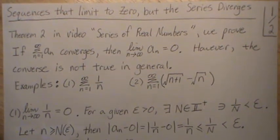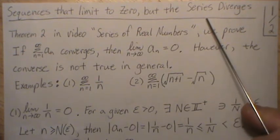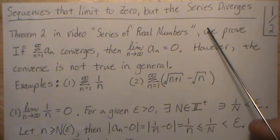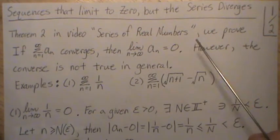Hello, in this video we look at sequences that limit to zero but their series diverges. What that means is each term as you go farther out approaches zero and limits to zero, but if you were to add up all the terms then it goes to infinity.